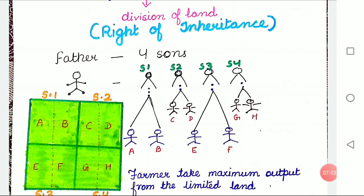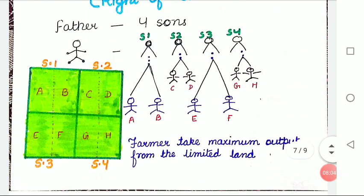In this type of farming, the size of land holdings is small. Why? That is because of the right of inheritance. According to the right of inheritance, the property of the ancestors is divided among children. So when the property is divided among the children, the size reduces. As you can see in this picture, a father has divided his plot of land among his four sons, so everyone is getting one-fourth part of the land.